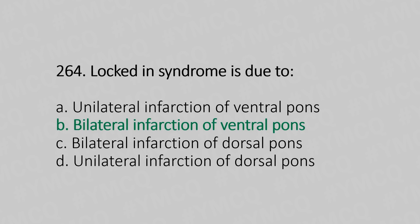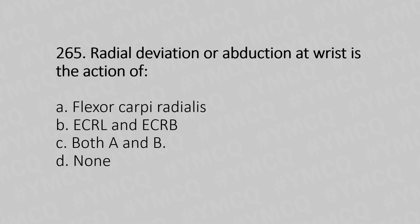Now let's move to question number 265. Radial deviation or abduction at the wrist is the action of: Option A, Flexor Carpi Radialis; Option B, Extensor Carpi Radialis Longus and Extensor Carpi Radialis Brevis; Option C, Both A and B; Option D, None. And the answer is Option A, Flexor Carpi Radialis.